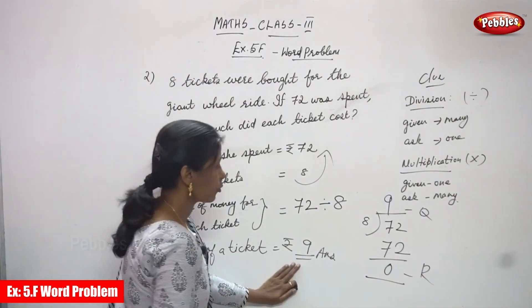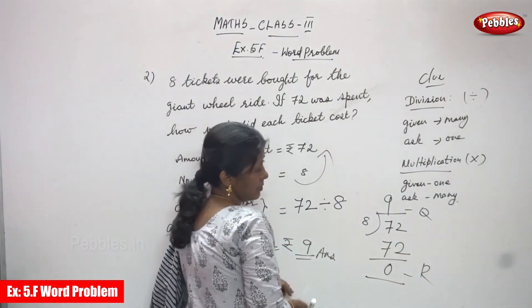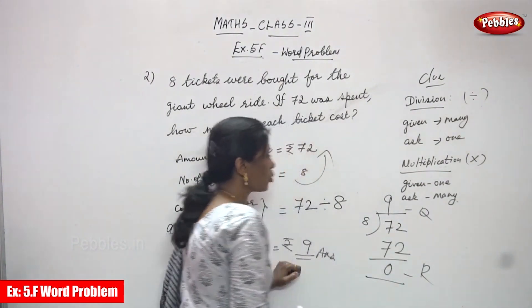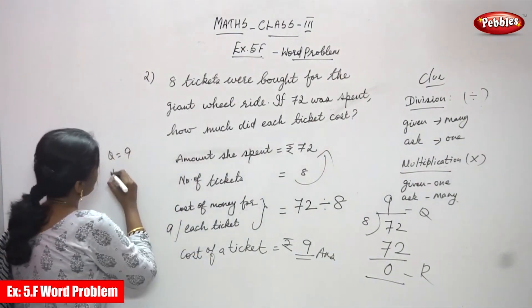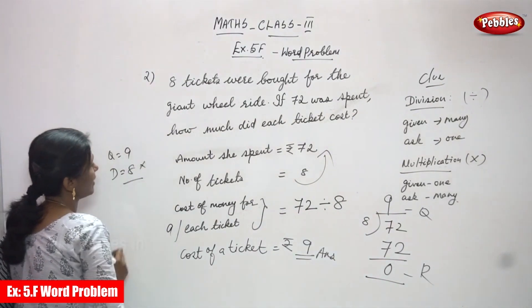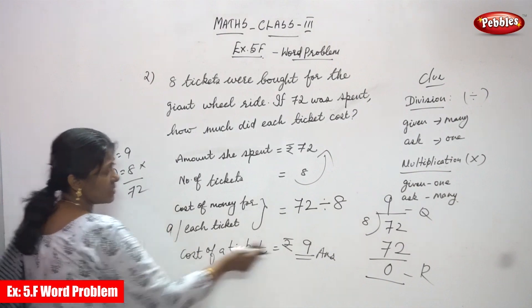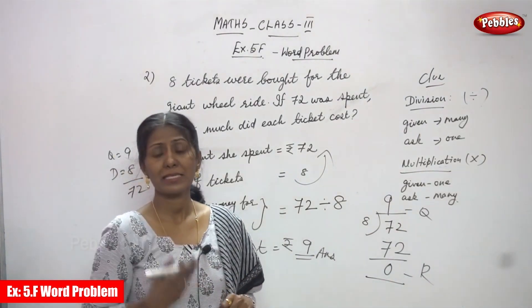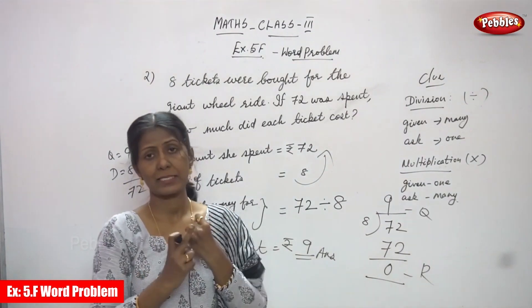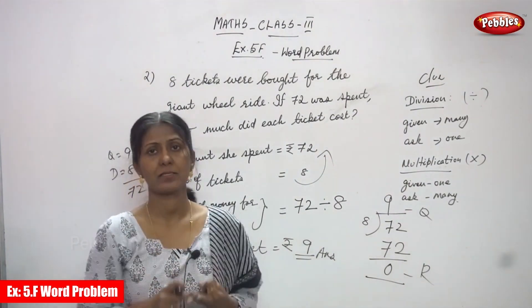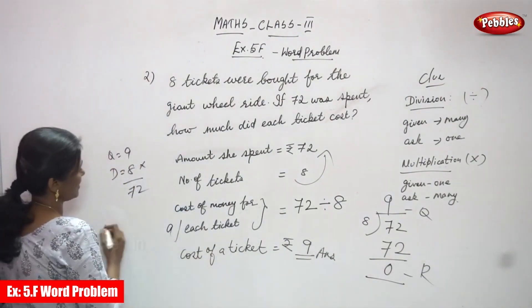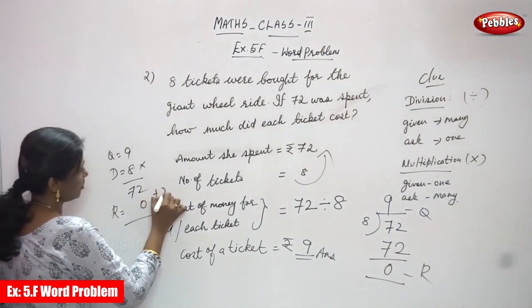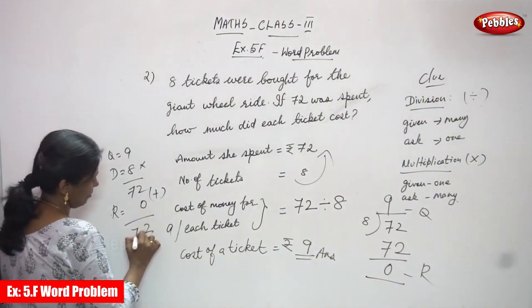If you want to check whether the answer is right or wrong, use the check method. The formula is: quotient multiplied by divisor, then add the remainder. Quotient is 9, divisor is 8, so 9 into 8 — you know that is 72 — which equals the dividend. Using the 8 times table up to 9: 8 nines are 72. Remainder is 0, so 72 plus 0 equals 72.